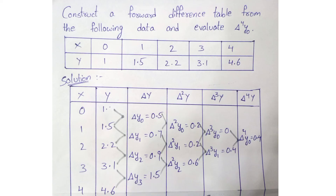Now we compute the delta cubed y values. Delta cubed y0 = delta squared y1 minus delta squared y0 = 0.2 minus 0.2 = 0. Delta cubed y1 = delta squared y2 minus delta squared y1 = 0.6 minus 0.2 = 0.4. So the delta cubed y values are 0 and 0.4.